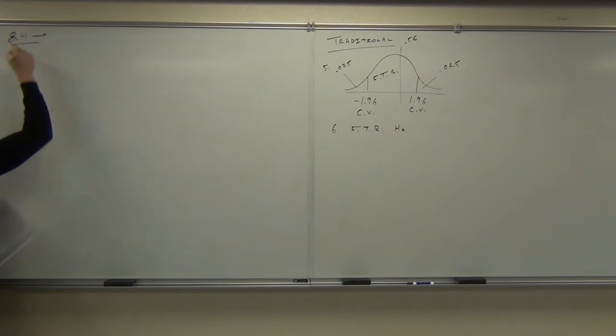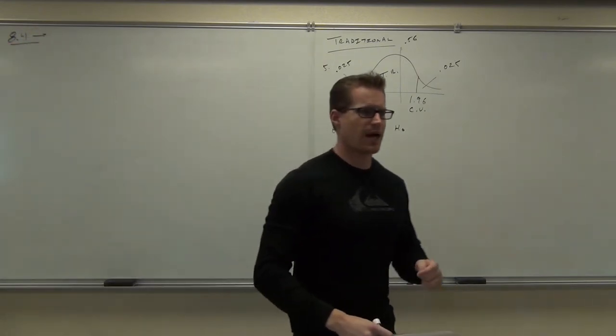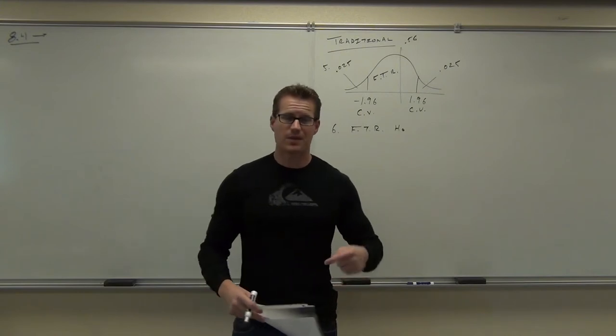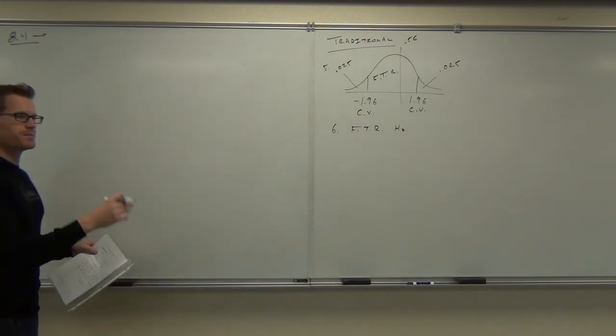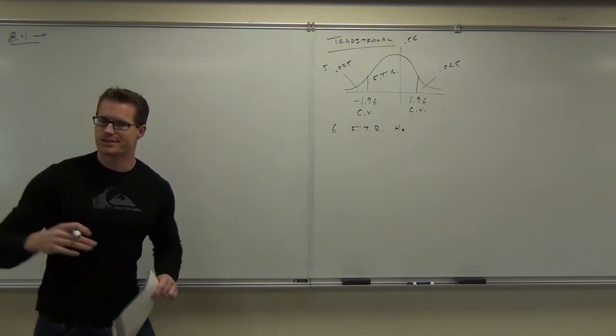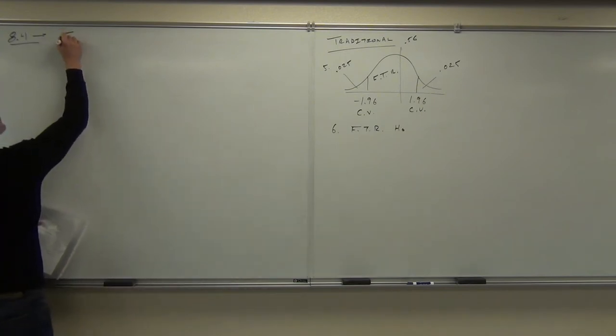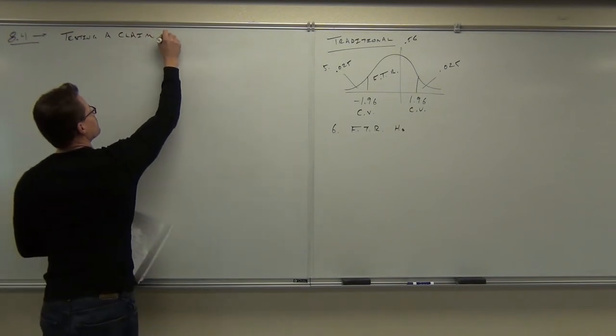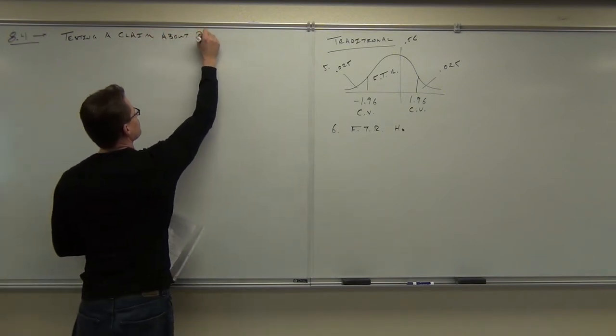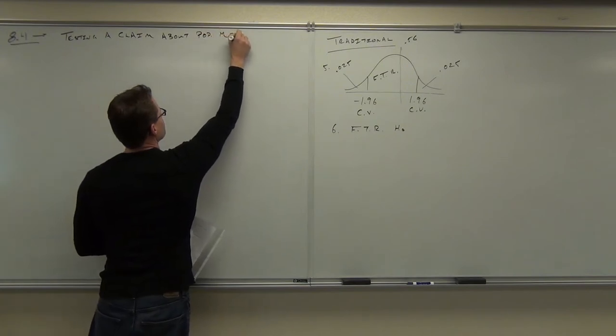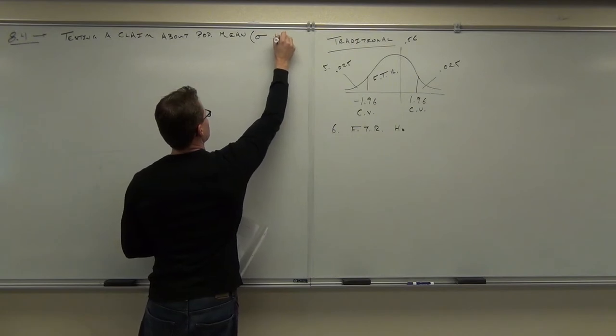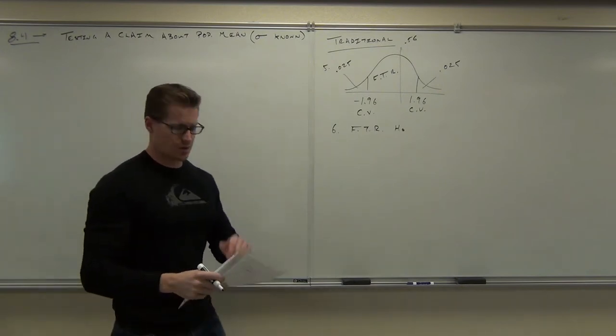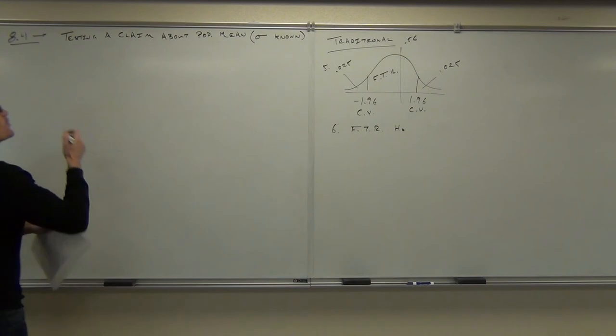Now in 8.4, we're not dealing with proportions anymore. It's going to be real similar to what we had in Chapter 7, where we have means, but we have two different scenarios. Either you know the standard deviation for the population or you don't. So we're going to talk right now, testing a claim about a mean when our sigma or our standard deviation for the population is known.